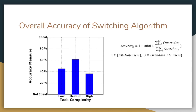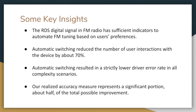In conclusion, the key insights are: the RDS digital signal in FM radio has sufficient indicators to automate FM tuning based on user preferences; automatic switching reduced the number of user interactions with the device by about 70%; automatic switching resulted in a strictly lower driver error rate in all complexity scenarios; and the realized accuracy measure represents a significant portion — above 50% — of the total possible improvement.